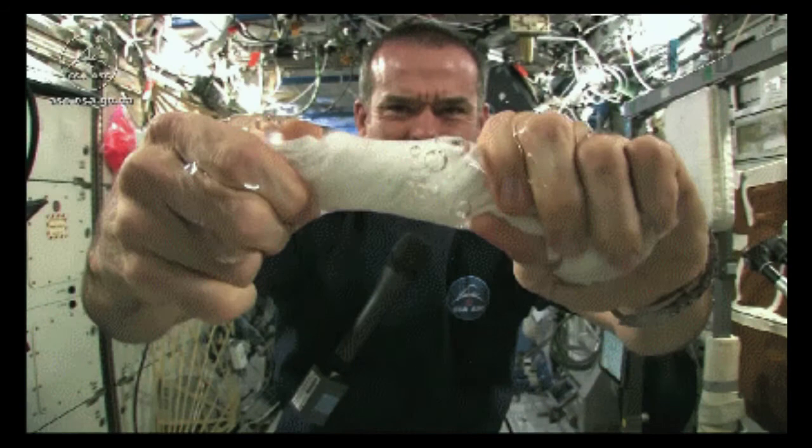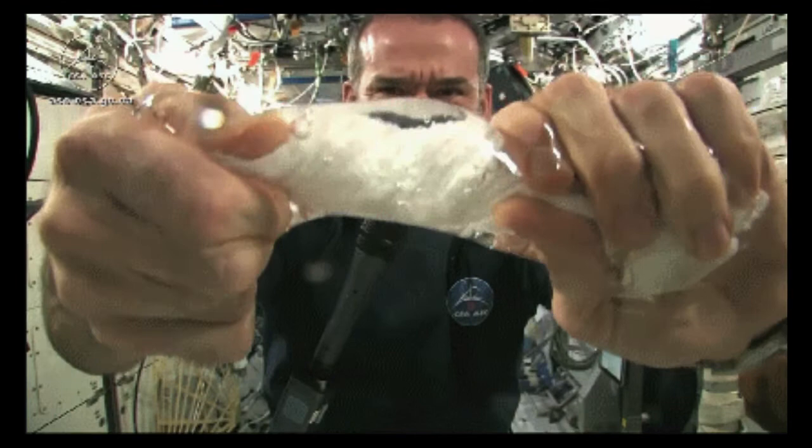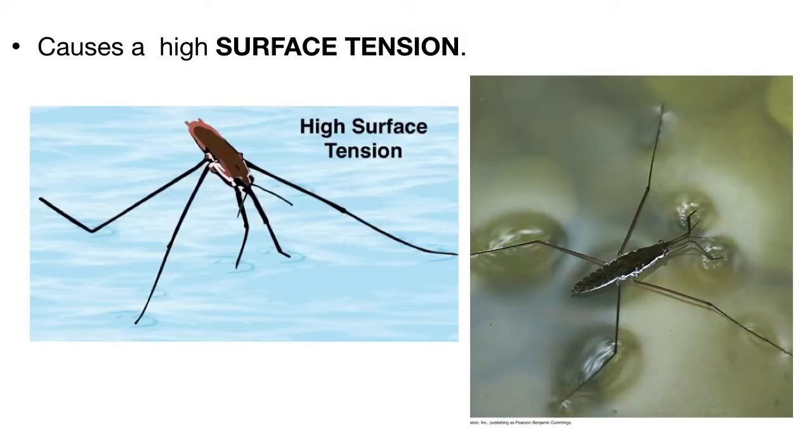Or in this video, where Canadian astronaut Chris Hadfield demonstrates a challenge when wringing out a wet towel in space. Notice how the water molecules are sticking to each other and make it very, very difficult to remove the water from the towel.